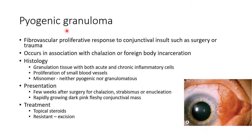Pyogenic granuloma is a fibrovascular proliferative response to conjunctival insult such as surgery or trauma. It occurs in association with chalazion or foreign body incarceration. Histologically there is granulation tissue with both acute and chronic inflammatory cells and proliferation of small blood vessels. The term pyogenic granuloma is a misnomer as it is neither pyogenic nor granulomatous.